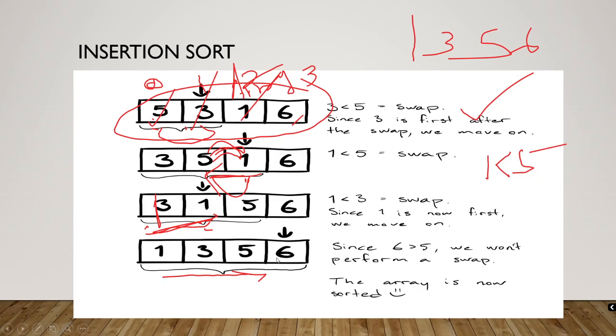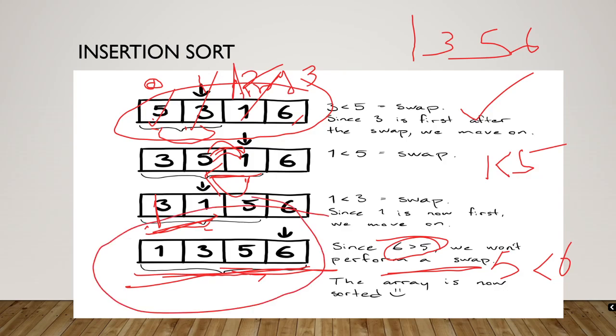Then I have to check, is 5 less than 6? 5 is less than 6. Yes, 5 is less than 6, that is, as 6 is greater than 5, so we won't perform a swap. Everywhere we don't need to swap. So now this is our sorted array.